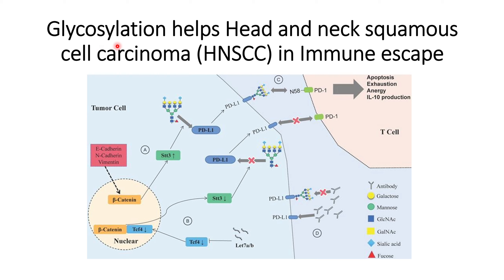In this video we will discuss how glycosylation helps head and neck squamous cell carcinoma (HNSCC) in immune escape. Disruptions in glycosylation occur within tumor cell lines. In some cancers such as pancreatic cancer cell lines, there is upregulation of sialic acids, whereas in HNSCC there is downregulation of sialic acids observed in those tumor cells.